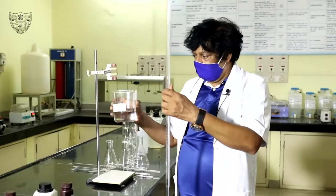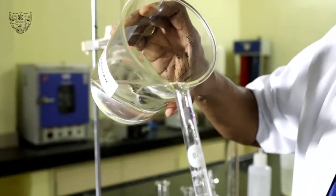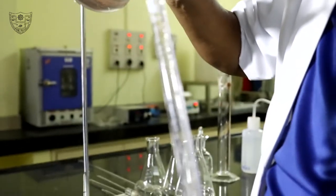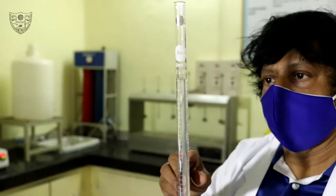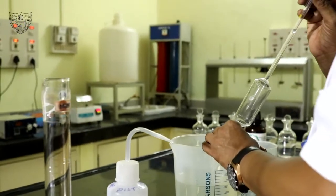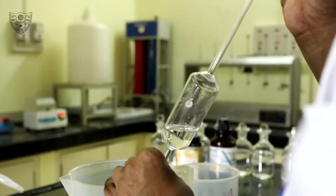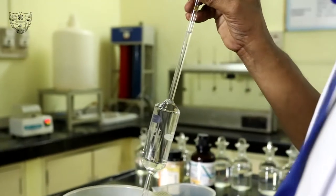Standard 0.01 normal sodium thiosulfate is used as a titrant. Pipet out 200 ml of water sample using 100 ml volumetric pipet in 10 different bottles.